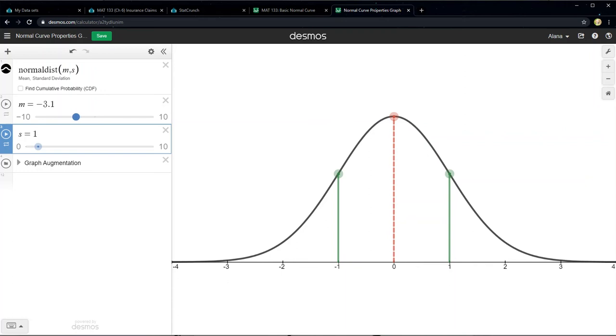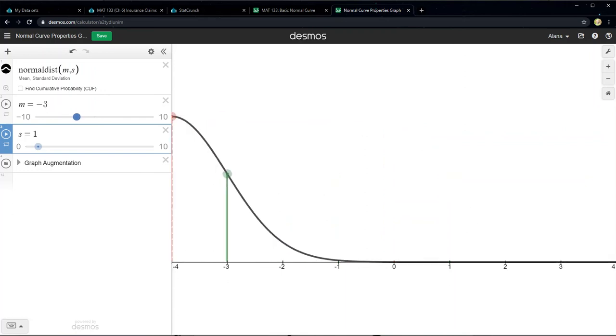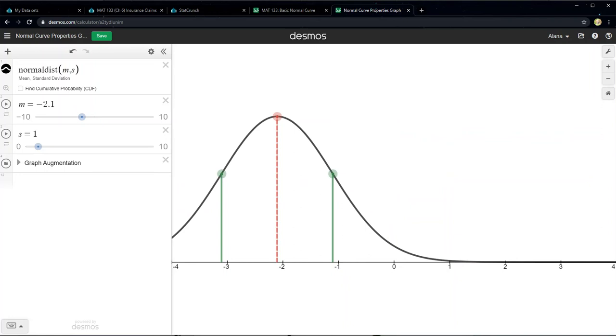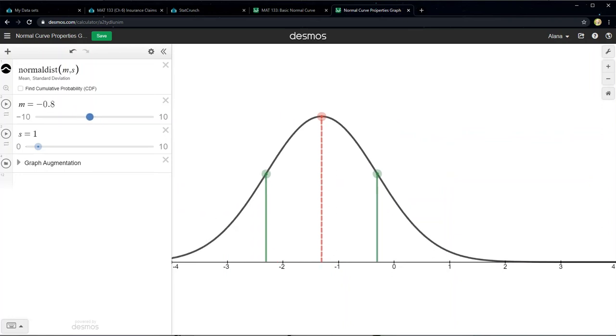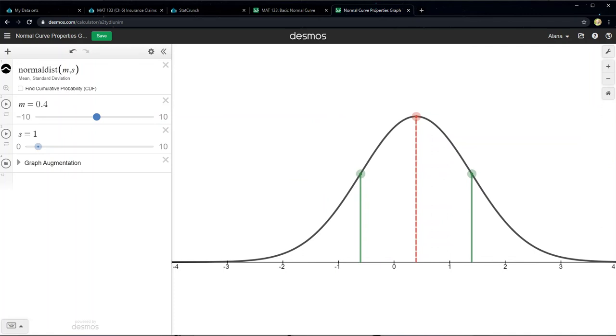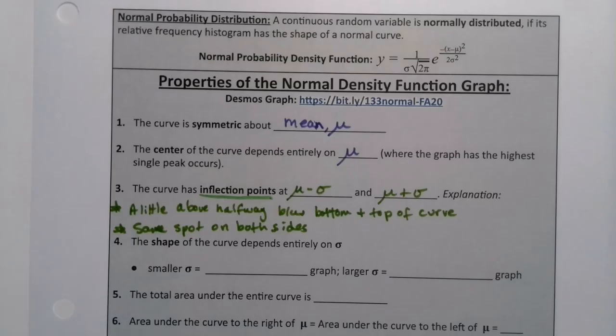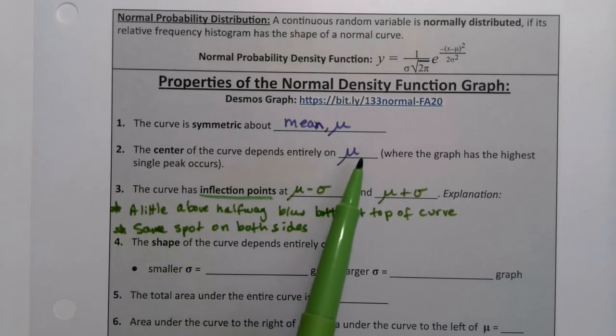Let me show you what that means. If I push this mean left, to a lower value, then the center becomes negative 2.1 because that's what I made the mean. If I make the mean 0.4, that's where that center line is. So that's why number two says the center of the curve depends entirely on μ. Whatever μ is, that will be the center of your curve.